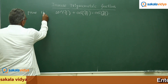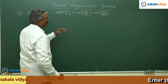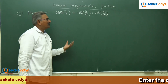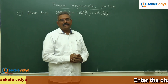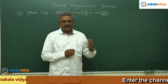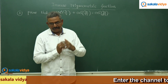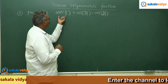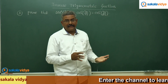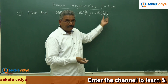One more question: prove that sin inverse of 3 by 5 plus cos inverse of 12 by 13 equals cos inverse of 33 by 65. The problem can be restated. Let us consider this is alpha and this is beta, so alpha plus beta equals cos inverse of 33 by 65. It is enough to prove that cos of alpha plus beta equals 33 by 65.